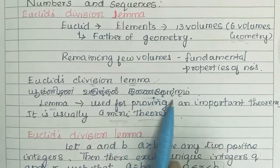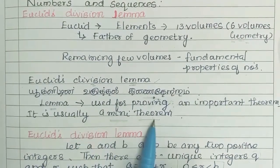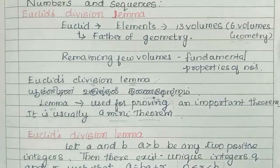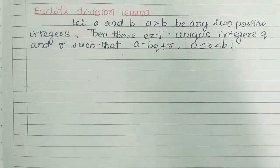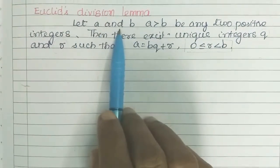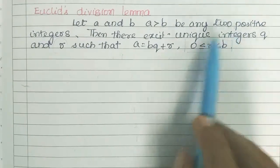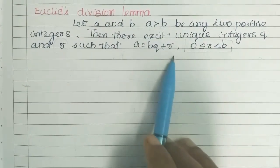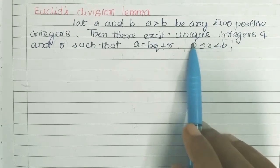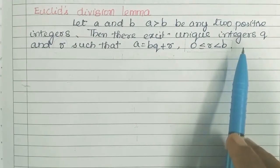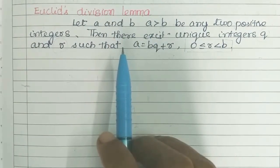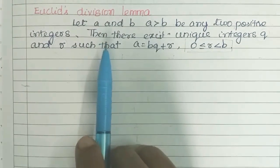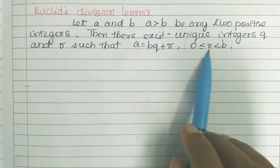A Lemma is usually a mini-theorem. Let a and b be any two positive integers where a is greater than b. Then there exist unique integers q and r such that a equals bq plus r, where r is greater than or equal to 0 and r is less than b. This is the equation of Euclid's Division Lemma.